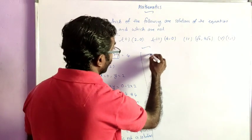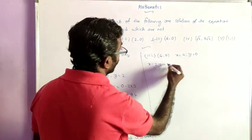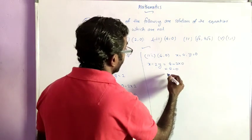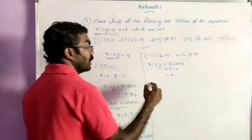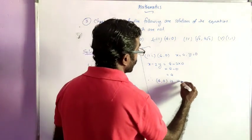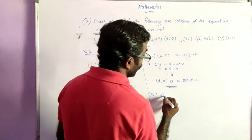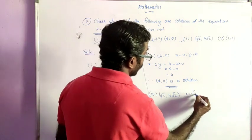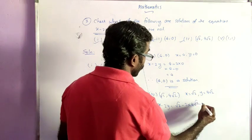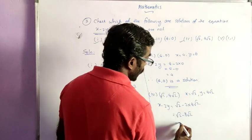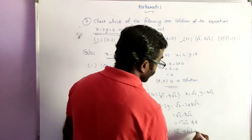For (4, 0): x minus 2y equals 4 minus 2 times 0, which is 4 minus 0, equal to 4. This satisfies the equation, so (4, 0) is a solution. For (√2, 4√2): x minus 2y equals √2 minus 2 times 4√2, which is √2 minus 8√2, giving minus 7√2. This is clearly not equal to 4, so (√2, 4√2) is not a solution.